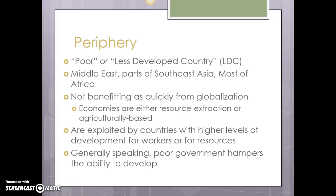Our periphery countries are our poorer, less-developed countries — LDC, another acronym you need to know. It's most of the Middle East with the exception of Saudi Arabia, large parts of Southeast Asia, and most of Africa with just a handful of exceptions. These countries benefit a little from globalization but not as much, and they are much more affected by global economic swings. Their economies are almost entirely resource extraction or agriculture based.